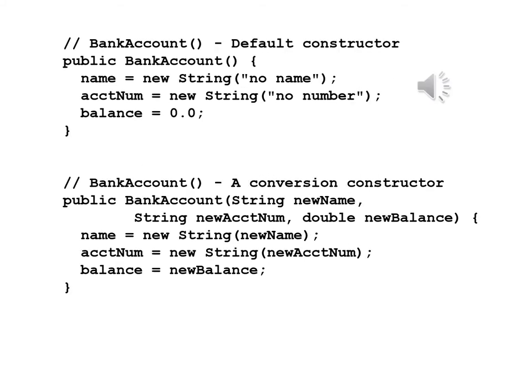We begin the methods with the constructors — the default constructor first. Public BankAccount: name equals new String "no name", accountNum equals String "no number", balance equals zero. The names "no name" and "no number" will serve as dummies. Balance is set at zero because we don't have anything in there yet.